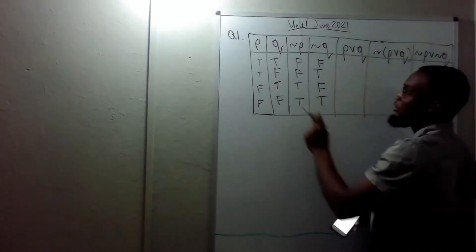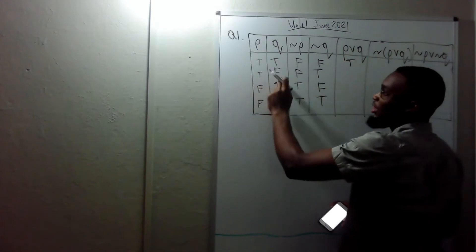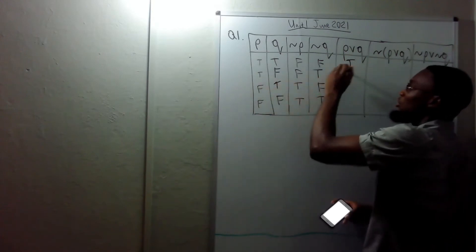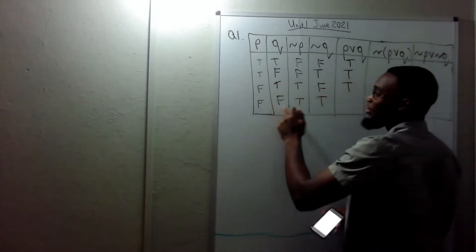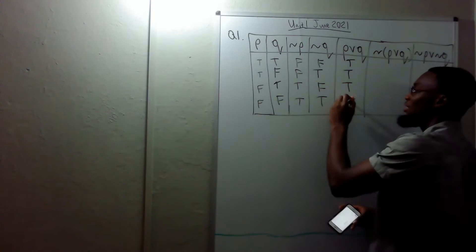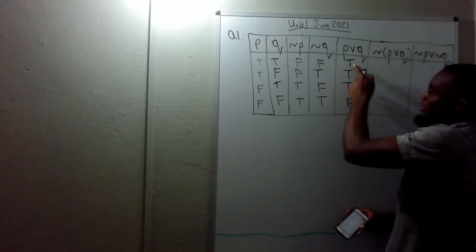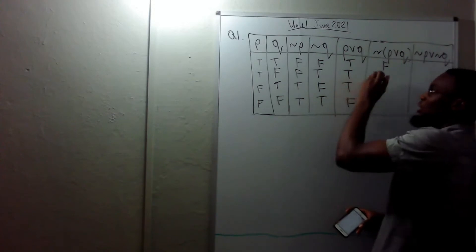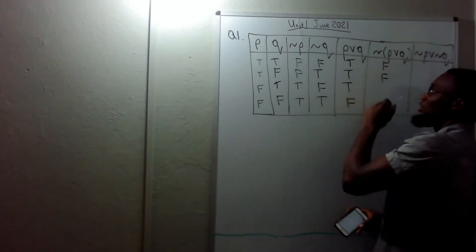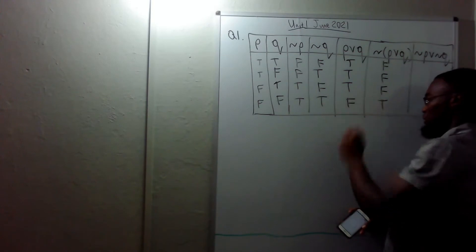For P∨Q: true or true is true, true or false is true, false or true is true, false or false is false. For ¬(P∨Q): negate true gives false, negate true gives false, negate true gives false, negate false gives true.